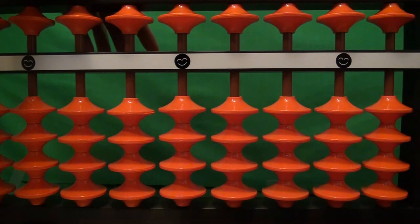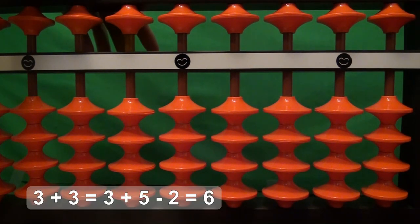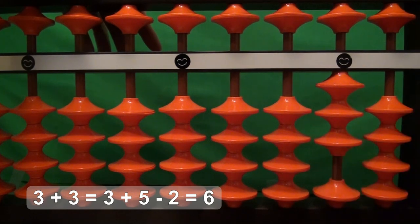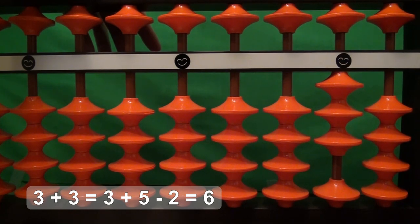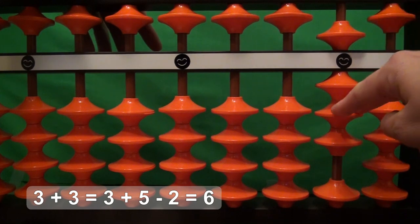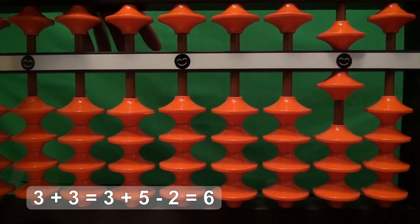Our next problem is three plus three. We have the three here. Now we want to add another three, but we don't have enough beads down here, so we'll do a similar thing to what we did before. We'll add three by adding five and taking away two, because five minus two equals three. So we add five and take away two—that is equivalent to adding three—and here we have our answer: six. Three plus three equals six.